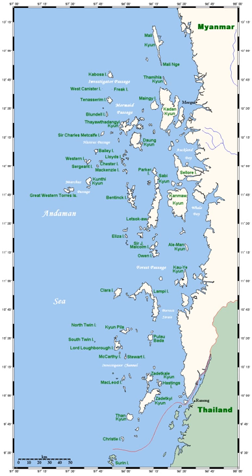Continental fragments correspond to land masses that have separated from a continental mass due to tectonic displacement. The Farallon Islands off the coast of California are an example.